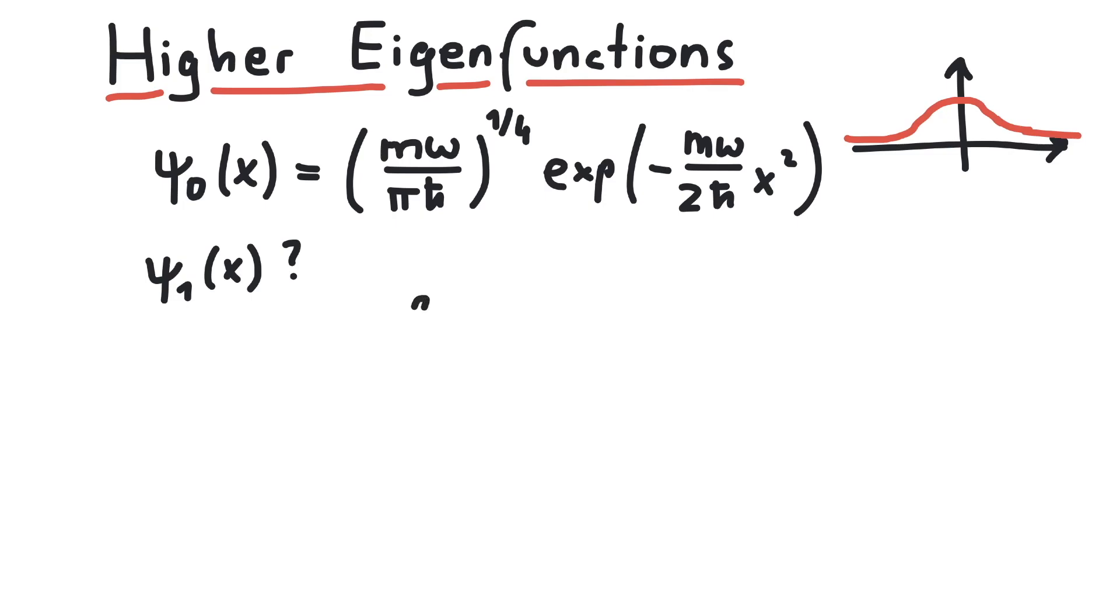That is, we start with an equation where the creation operator applied on the ground state gives our excited state 1. Next, we choose our basis. Say that we want the first state in the x basis.